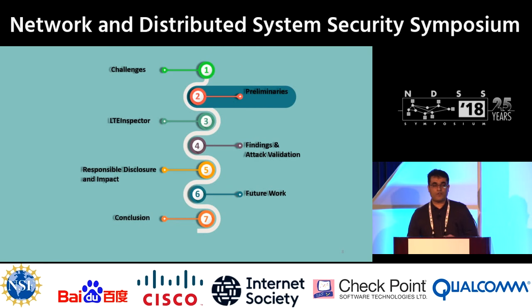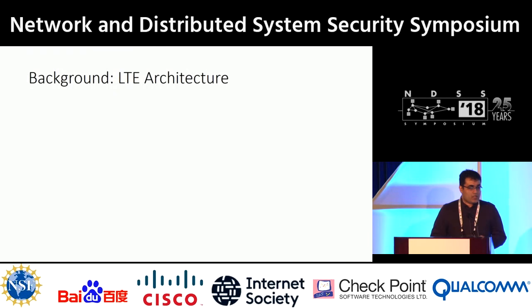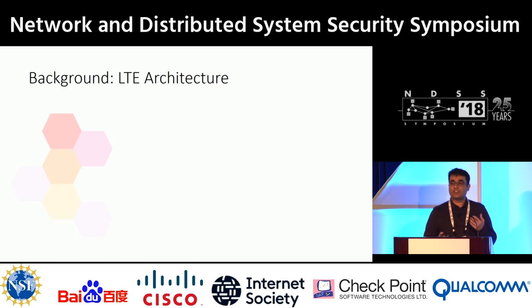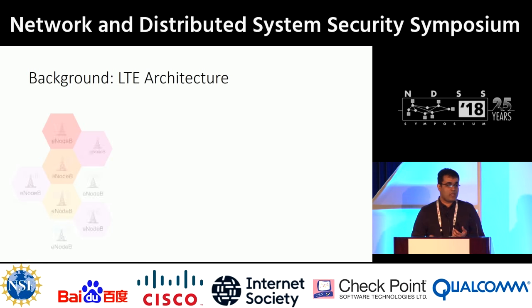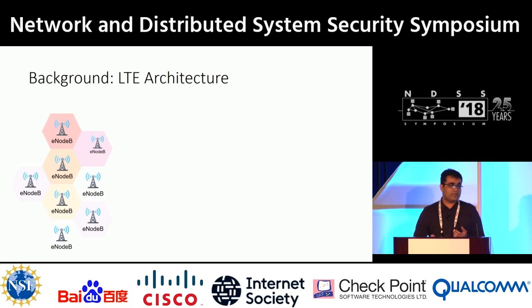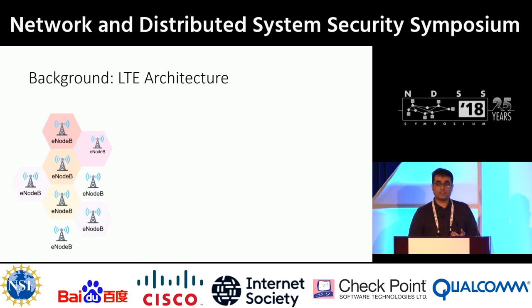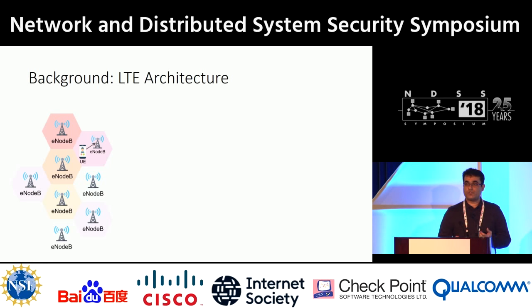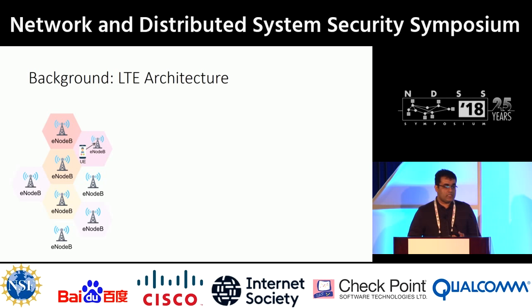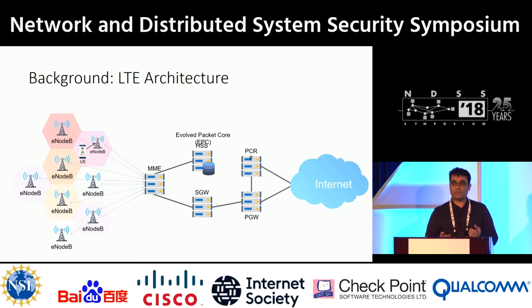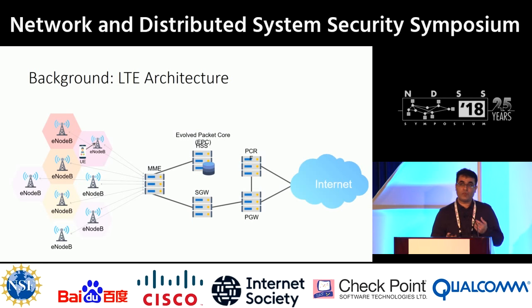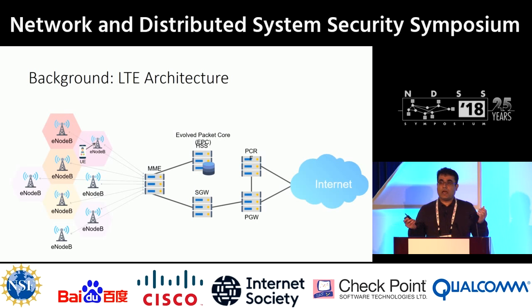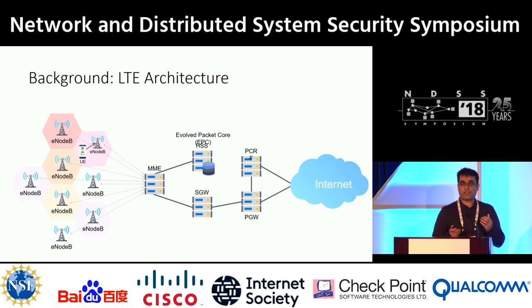In 4G context, a geographical area is partitioned into cells where each cell is served by a base station, called eNodeB in LTE jargon. This base station provides cellular connectivity to cellular devices, which we call user equipment or UE. The UE connects to the internet through a core network or EPC, which consists of many different nodes. Among them, the MME (Mobility Management Entity) and the Home Subscriber Server are the most important ones, as they take responsibility for managing the attach, detach, and paging procedures.